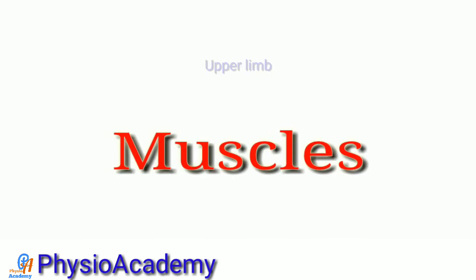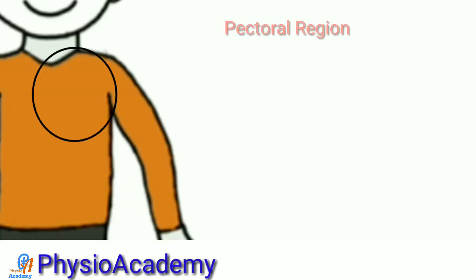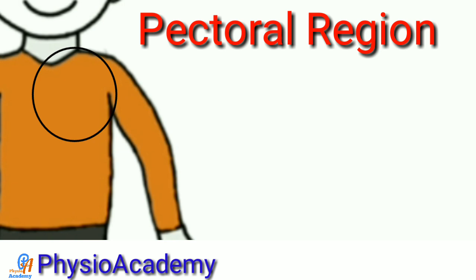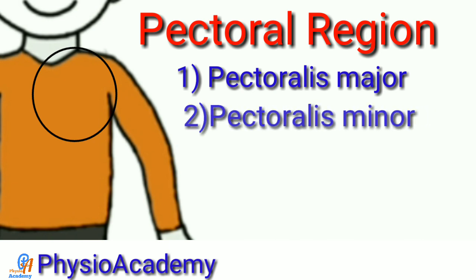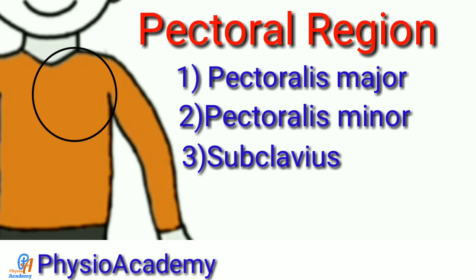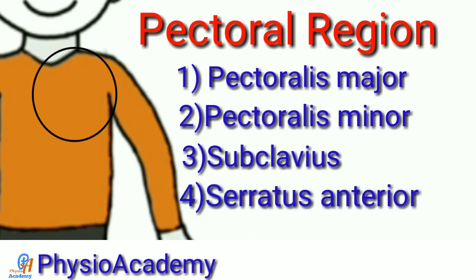Now we will see the muscles of the upper limb. In the pectoral region, there are four muscles. The first muscle is pectoralis major. The second is pectoralis minor. The third is subclavius, and the fourth is serratus anterior.